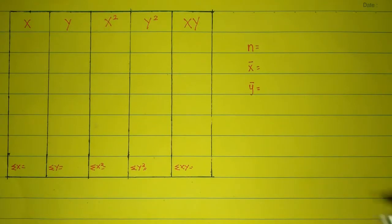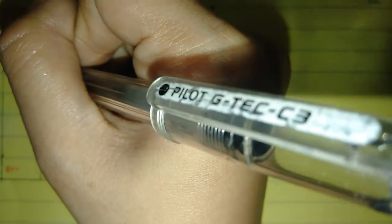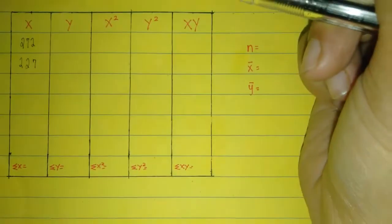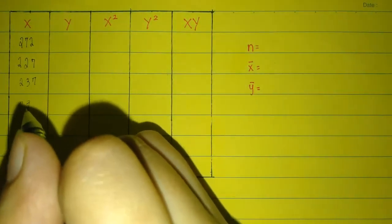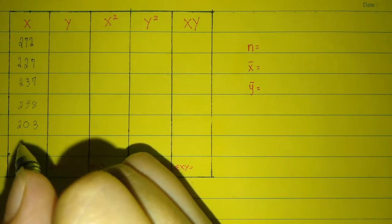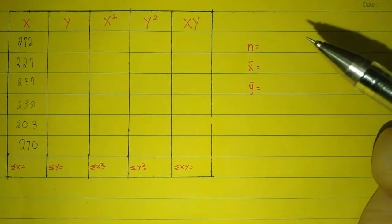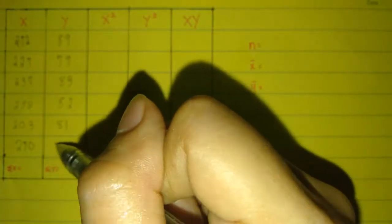The sample equation: x and y values are given. The x values are 272, 227, 237, 238, 203, and 270. The y values are 89, 79, 83, 82, 81, and 85.